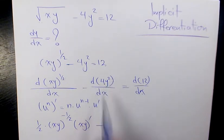Minus derivative of 4y squared, which will be 4 times 2, 8y dy over dx, and derivative of 12 with respect to x is 0.